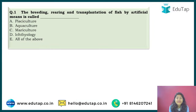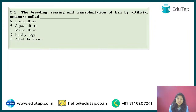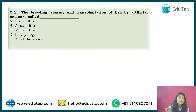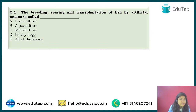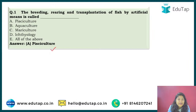Question number one: the breeding, rearing, and transplantation of fish by artificial means is called what? In this session we will do the basics of the fisheries chapter, and then in next sessions we'll cover important breeds and other aspects. From NABARD also, in-depth questions are now being asked from this chapter from the last two cycles. So we are going to cover this chapter thoroughly. BL says pisciculture is the right answer — and yes, that is correct.